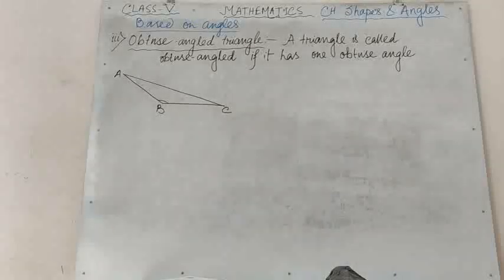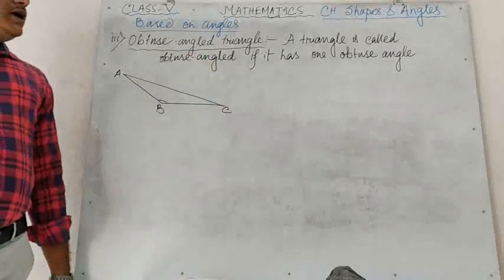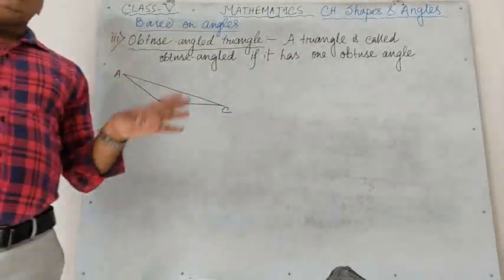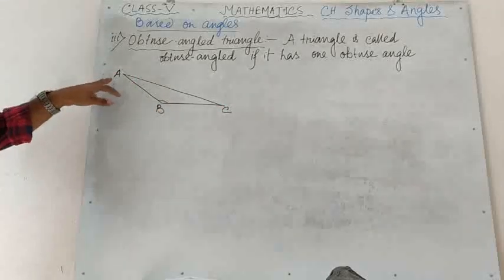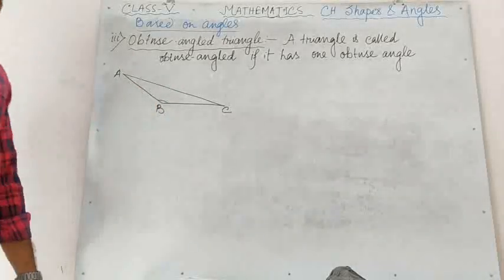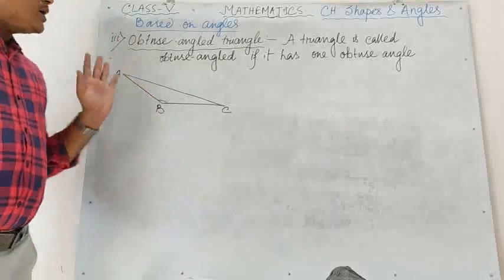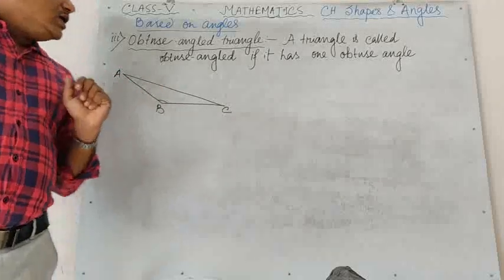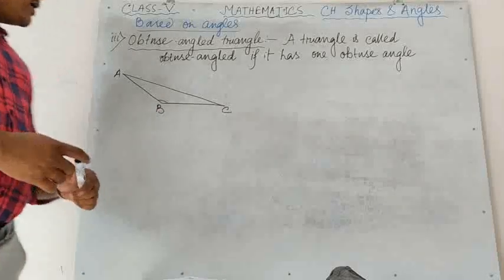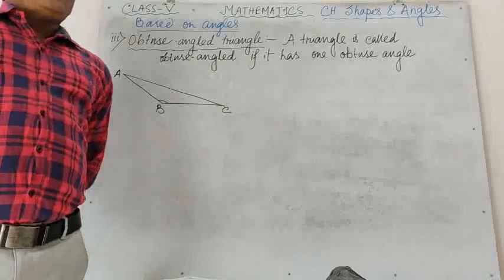Number 3: obtuse angled triangle. A triangle is called obtuse angled if it has one obtuse angle. In triangle ABC, angle B is an obtuse angle — that is, angle B is greater than 90 degree but less than 180 degree. So triangle ABC is an obtuse angled triangle.